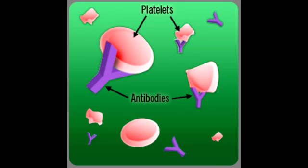What lab findings would you see in Idiopathic Thrombocytopenic Purpura? In ITP, you would see an increase in megakaryocytes. Megakaryocytes are the immature platelets because the body is trying to produce more platelets, and therefore there would be an increase in the level of immature platelets.